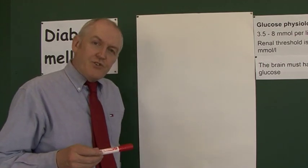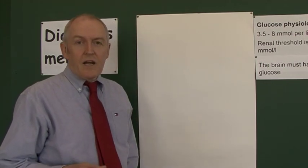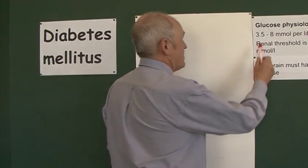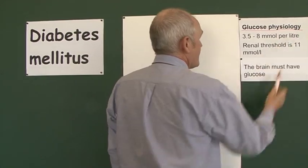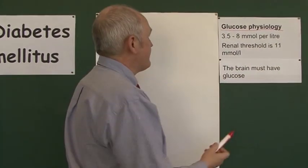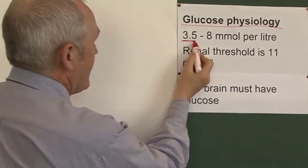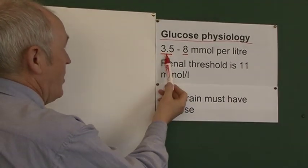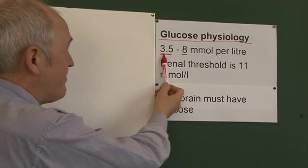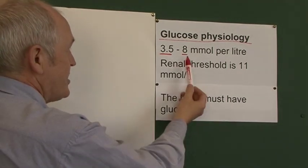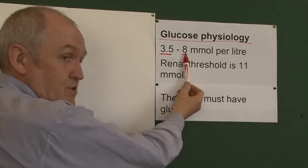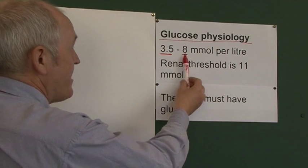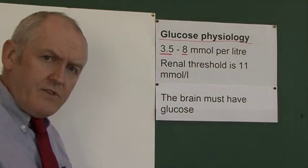We've seen that insulin stops the blood sugar levels going too high and glucagon stops the blood sugar levels from going too low. Normally in glucose physiology, in someone who is not diabetic, the blood sugar is between 3.5 to 8 millimoles. When they're hungry, glucagon keeps the blood sugar above 3.5, and when they've eaten, insulin keeps it below 8, although after a meal with a lot of carbohydrates it could go above 8 for a short period of time.